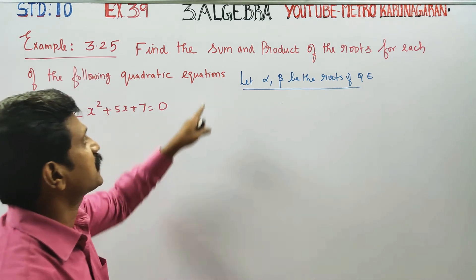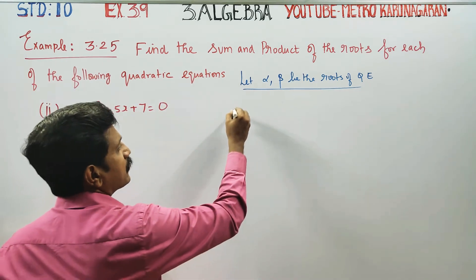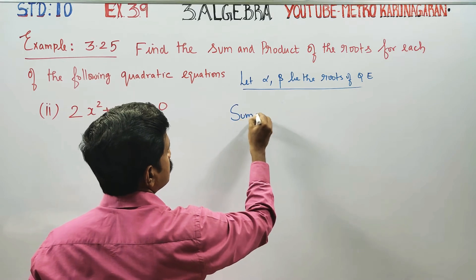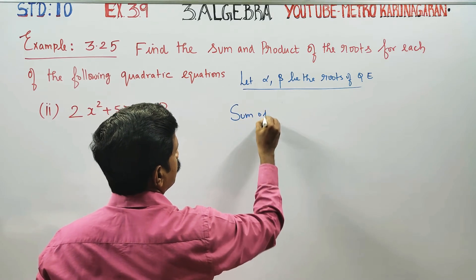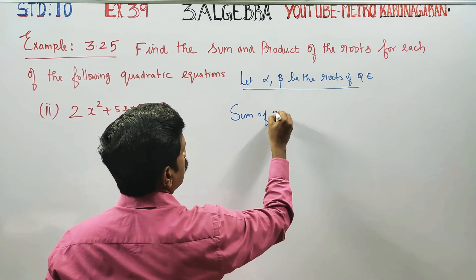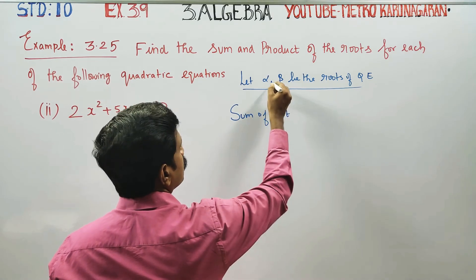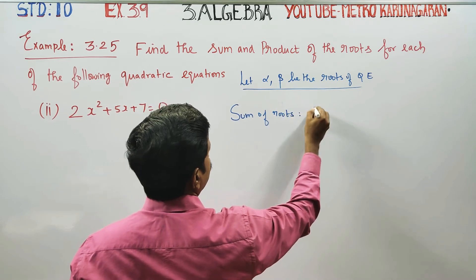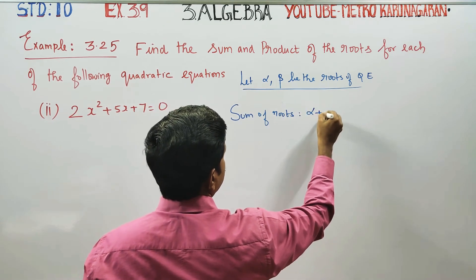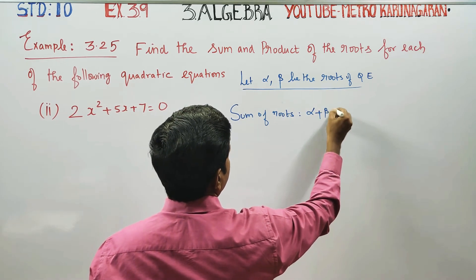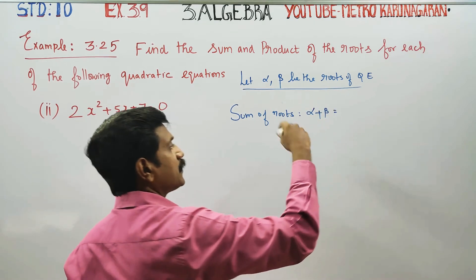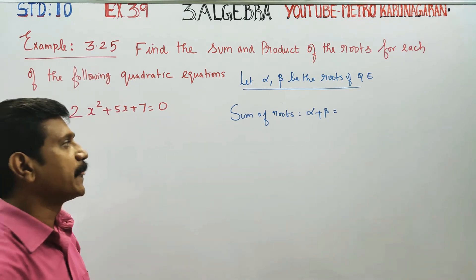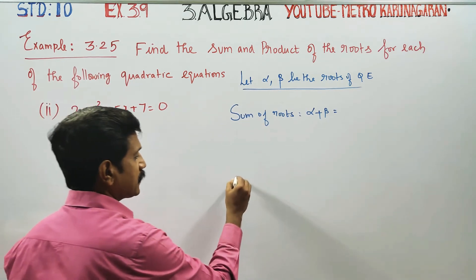First of all, sum of the roots. Alpha is 1, beta is 1. Alpha plus beta equals 1. Sum of the roots is 1. That's right.